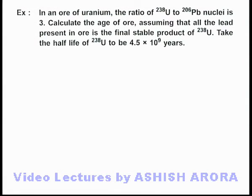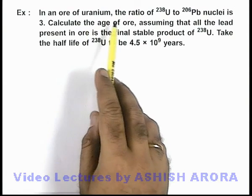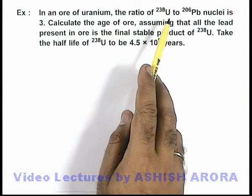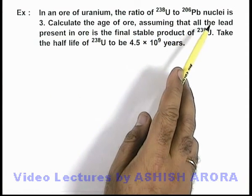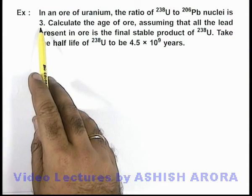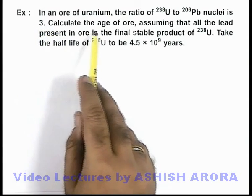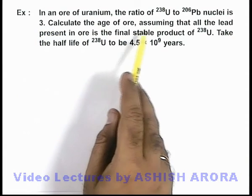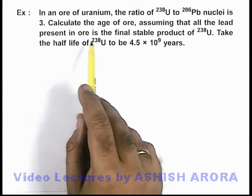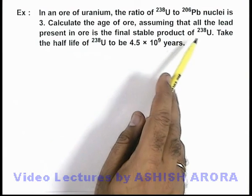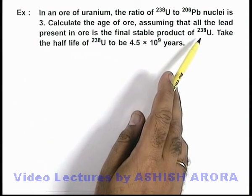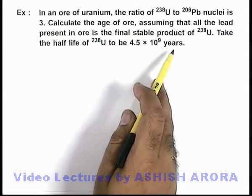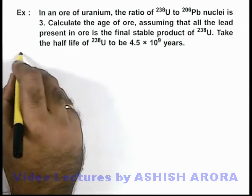In this example, we are given that in an ore of uranium, the ratio of uranium-238 to lead-206 nuclei is 3. We are required to calculate the age of ore, assuming that all the lead present in the ore is the final stable product of uranium-238. We are given the half-life of uranium to be 4.5 × 10^9 years.